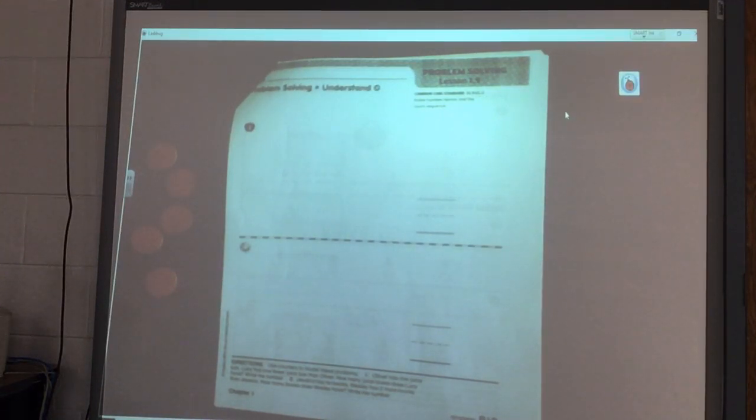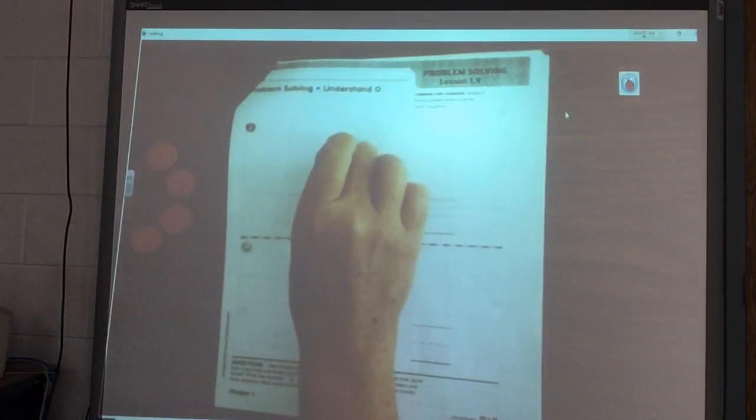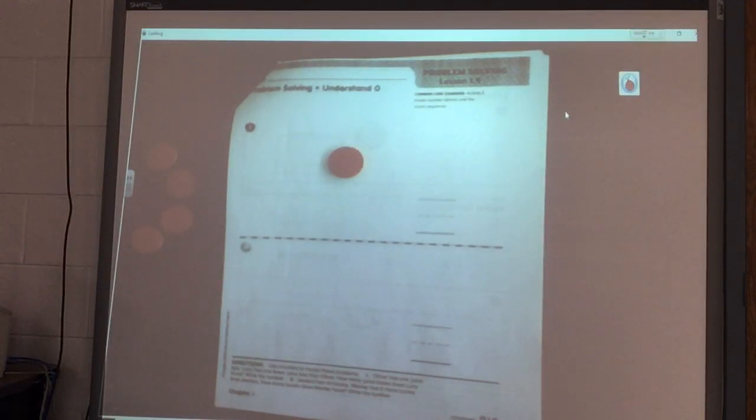The directions say use the counters to work these problems. Oliver has one juice box. So we're going to pretend like that is a juice box. Oliver has one.